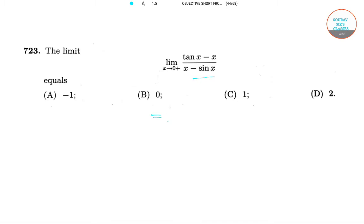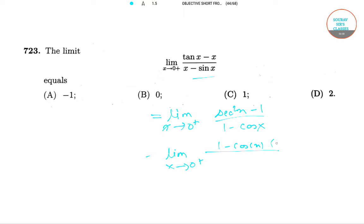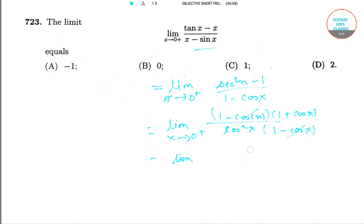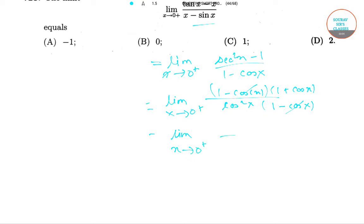we will have the limit as x tends to 0 of (sec squared x minus 1) divided by (1 minus cos x), which equals the limit as x tends to 0 of (1 minus cos x)(1 plus cos x) divided by cos squared x times (1 minus cos x). The (1 minus cos x) terms cancel out, giving the limit as x tends to 0 of (1 plus cos x) divided by cos squared x, which equals 2.